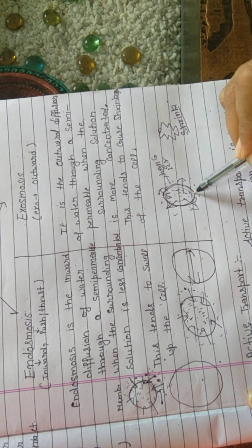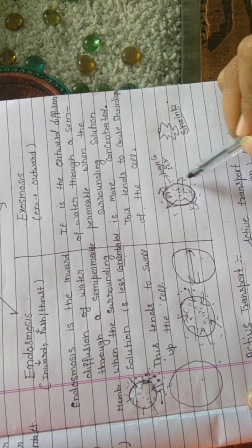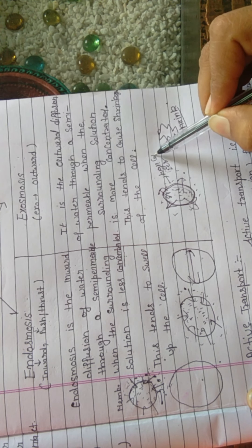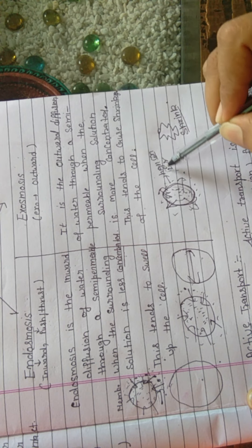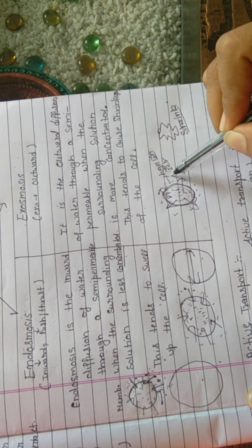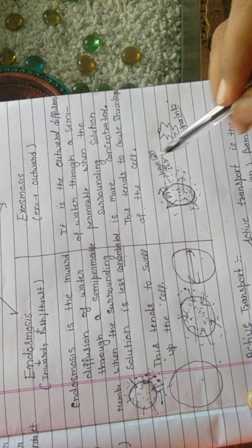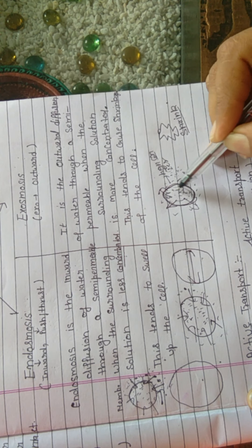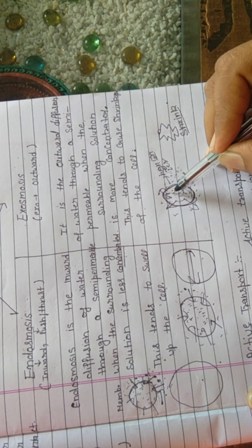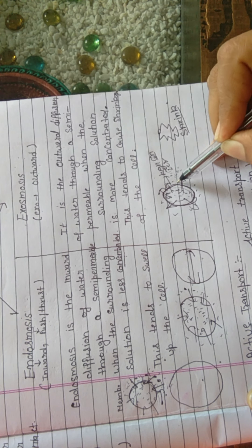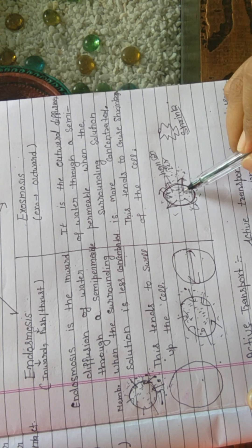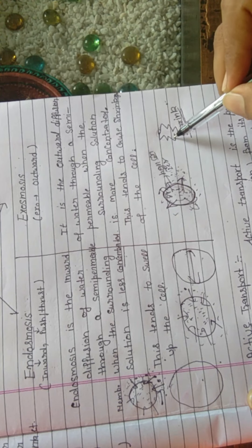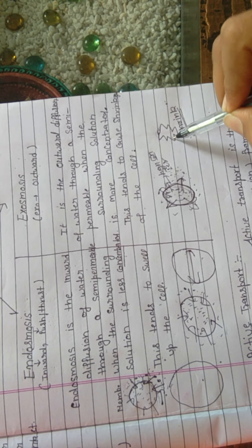Second is exo-osmosis — 'exo' means outward movement. Exo-osmosis is the outward diffusion of water through a semi-permeable membrane when the surrounding solution is more concentrated, meaning very little water is outside. So the liquid inside the cell moves outward, and the cell shrinks — this causes shrinkage of the cell.